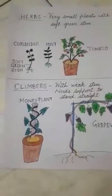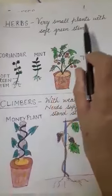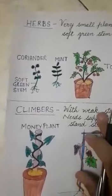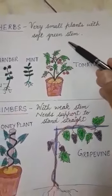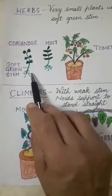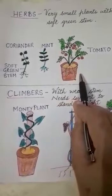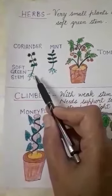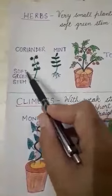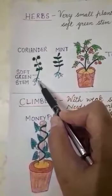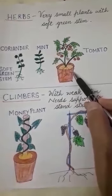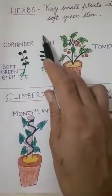The next type is herbs. Very small plants with a soft green stem are called herbs. I have drawn the picture of a coriander plant, mint, and a tomato plant. You have seen coriander and mint in your home. They have a very soft green stem. The tomato plant is also a herb.